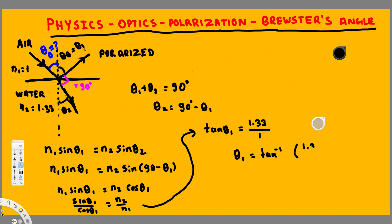Therefore theta 1 equals the inverse tangent of 1.33 over 1. If you calculate this, you get 53.06 degrees. This is the Brewster's angle — the incident angle required so that the reflected ray is polarized, making the angle between the refracted ray and the reflected ray 90 degrees. This is our final answer. I hope you guys find this video helpful!